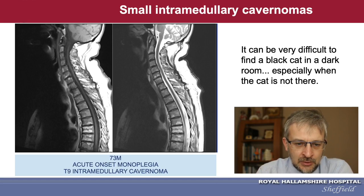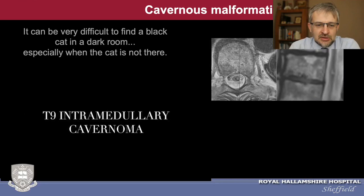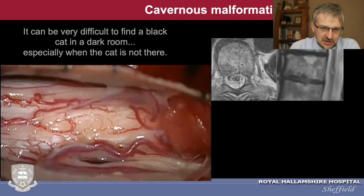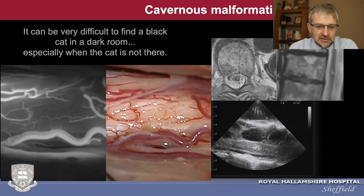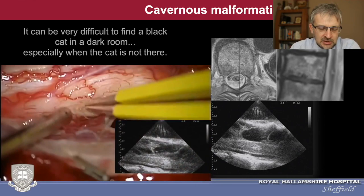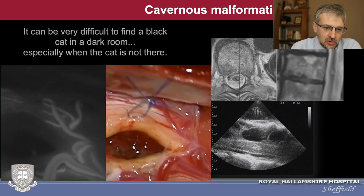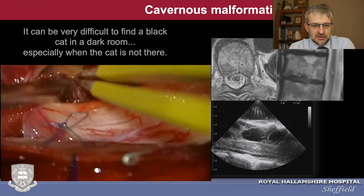This is a patient with a very small cavernous malformation inside the spinal cord. After opening the dura, the spinal cord looks absolutely normal. Some people suggest ICG, but I think this is of little benefit here. The main option to locate this lesion is ultrasound, which confirms with 100% accuracy that you are operating in the right place, after which you can open the spinal cord with a diamond knife and expose the tumor.